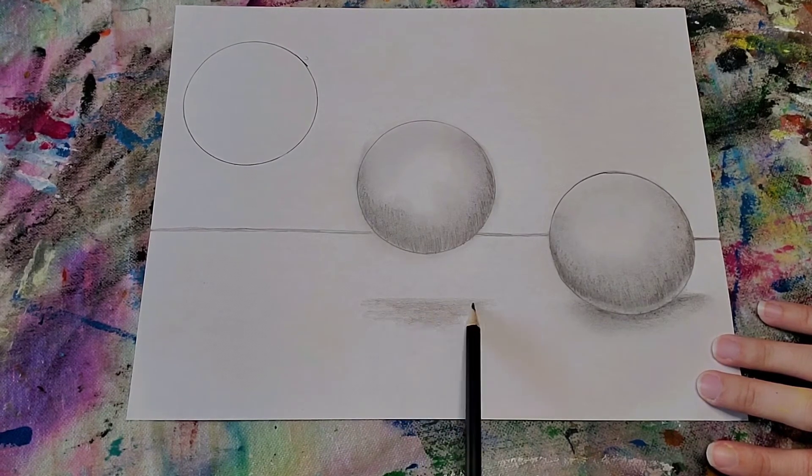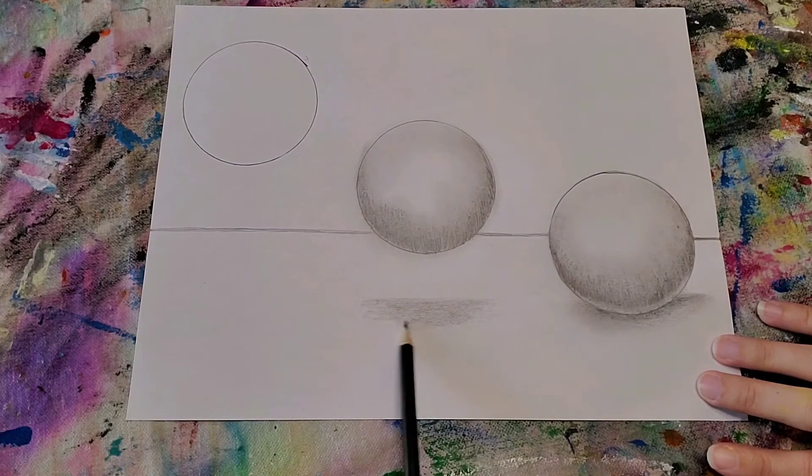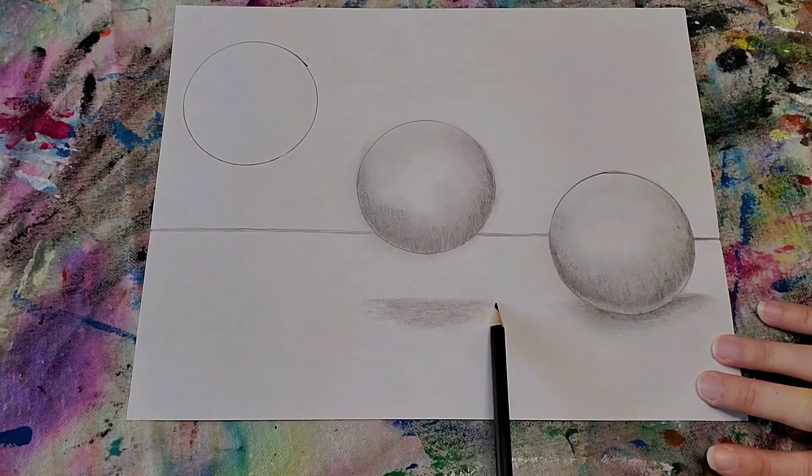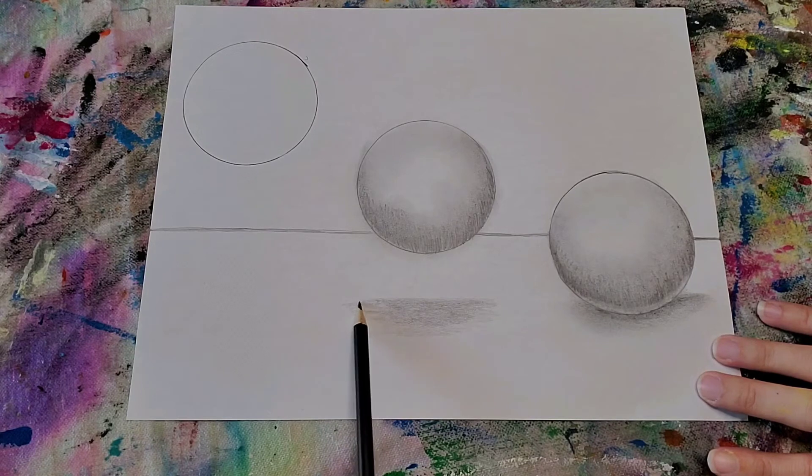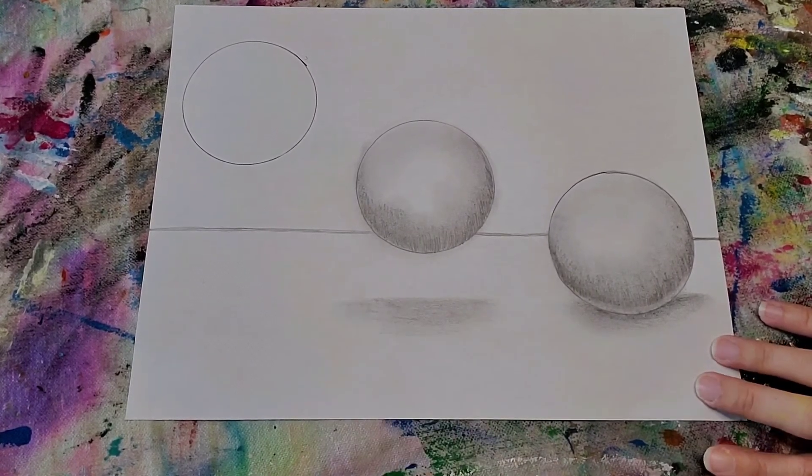I always start light and then just go darker as I go. This way, if you make a mistake, it's easier to erase. And then I'm going to go a little bit lighter as I come out. So take my finger, smudge it in.